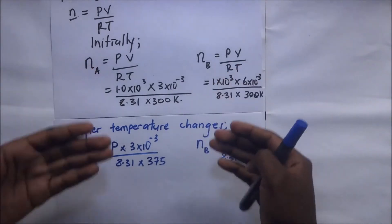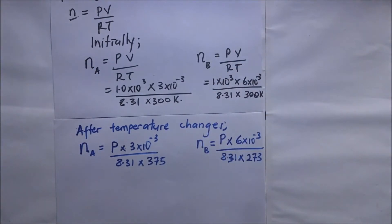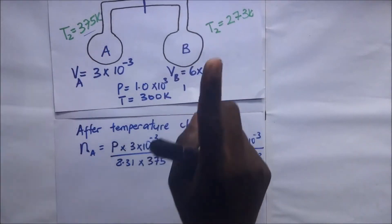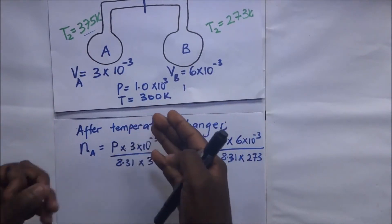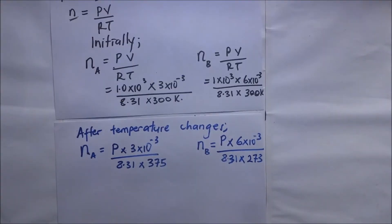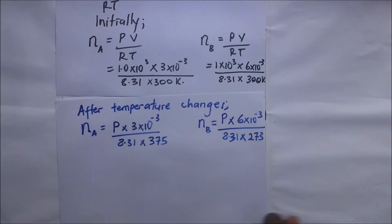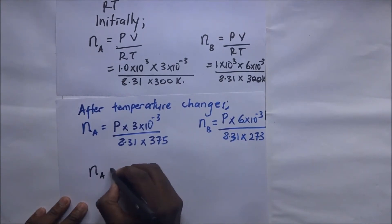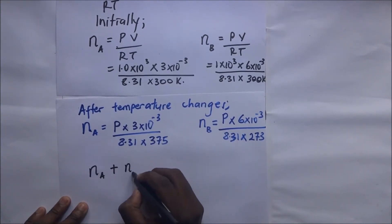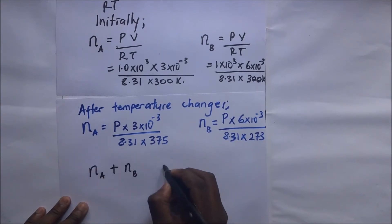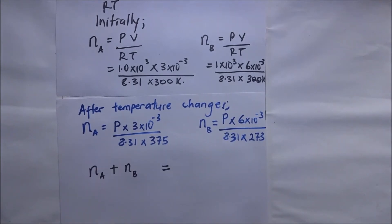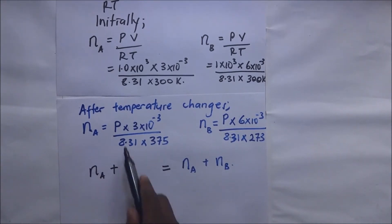Regardless of what happens, the quantity of gas remains the same. Therefore, the total number of moles before equals the total number of moles after: n_A(initial) + n_B(initial) = n_A(new) + n_B(new). From this equation we can solve for the unknown pressure P.